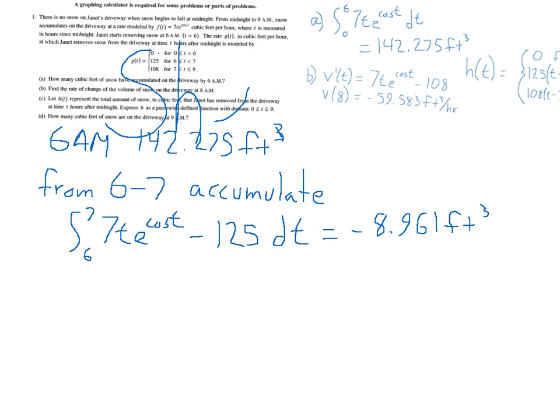And now we need to know what happens from 7 to 9. So let's look at that. We're going to do the exact same thing, except we're going to incorporate our different rate of removal. So here we take the integral from 7 to 9 of the rate that the snow is falling, which is again 7t e to the cosine t, minus now 108 dt. And that is negative 100.978 cubic feet.